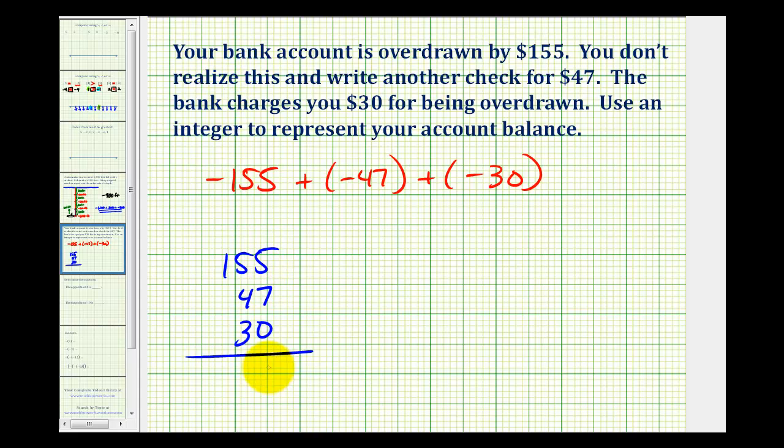So 5 plus 7 would be 12. We'd carry a 1. 1 plus 5 plus 4, that'd be 10. Plus 3 would be 13. Carry a 1. So we owe a total of 232 dollars.